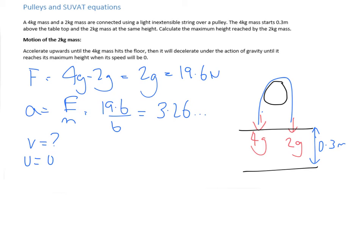A is 3.26. The distance over which the acceleration occurs is 0.3 metres. Because if you think about it, in 0.3 metres, the 4kg is going to hit the floor. And t, we don't know.